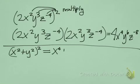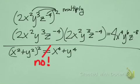So if I have x squared plus y squared, quantity squared, that should be the same as x to the 4th plus y to the 4th. But it's not — definitely not.